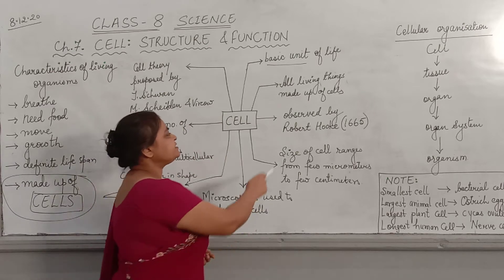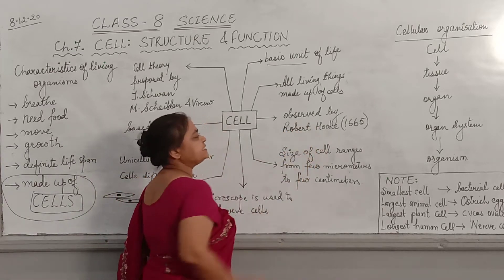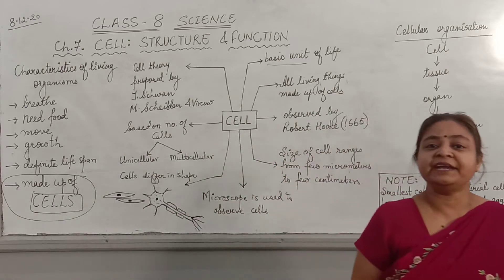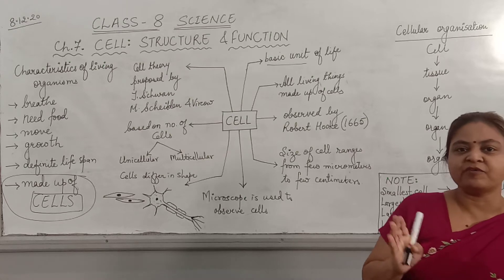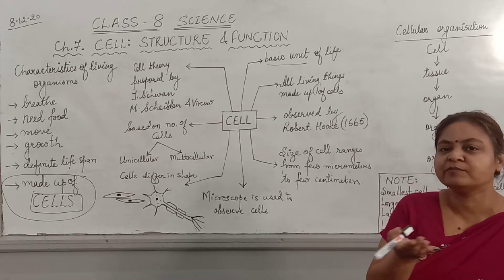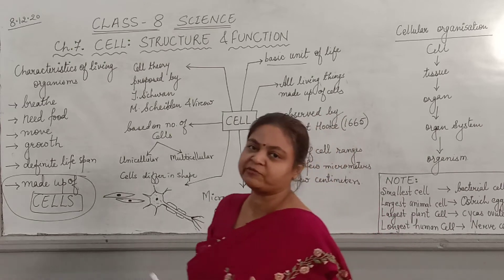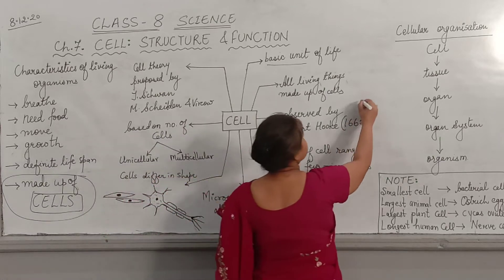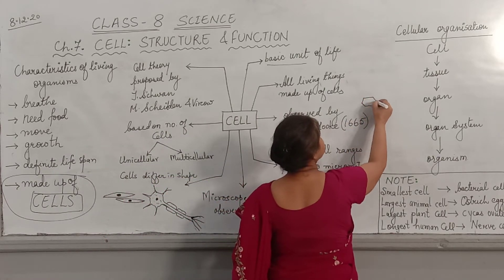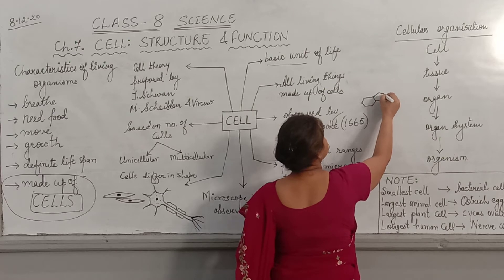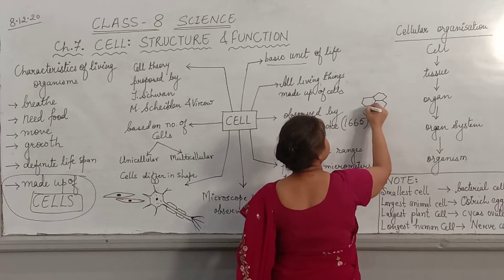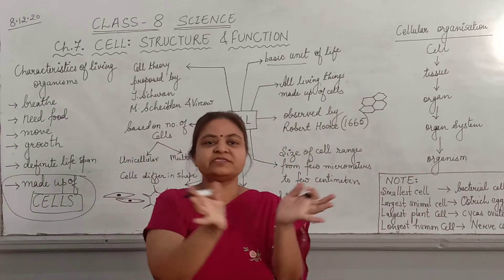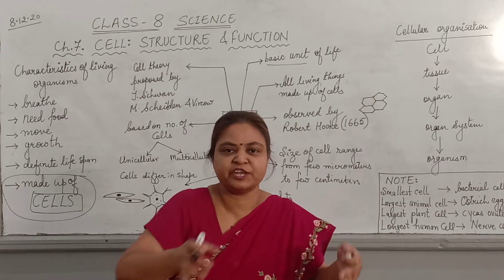The cell was first observed by Robert Hooke in 1665. He observed cells in dead cork tissue. He took a slice from it and observed it under a primitive type of microscope — at that time modern microscopes were not there. He observed a structure like a honeycomb. These were small enclosed structures, and that is why the name 'cell' was given.